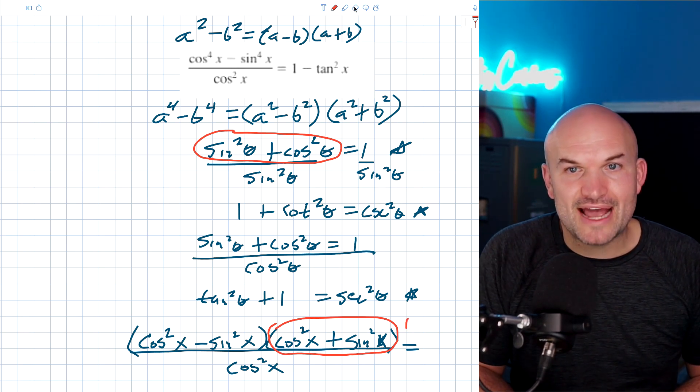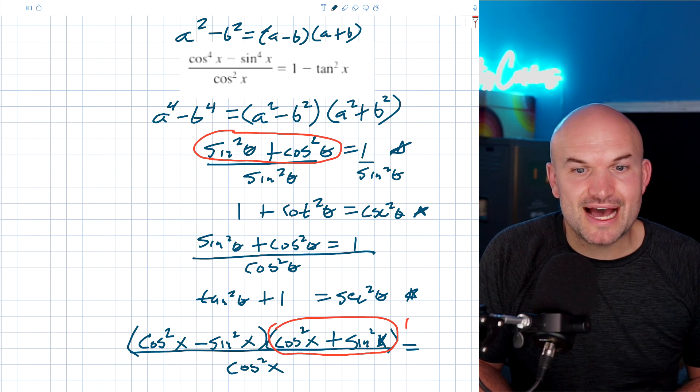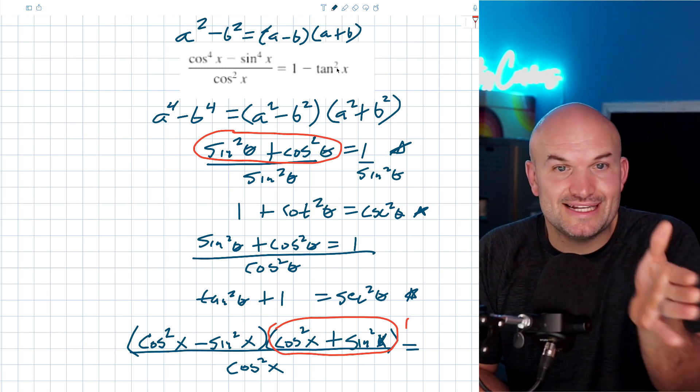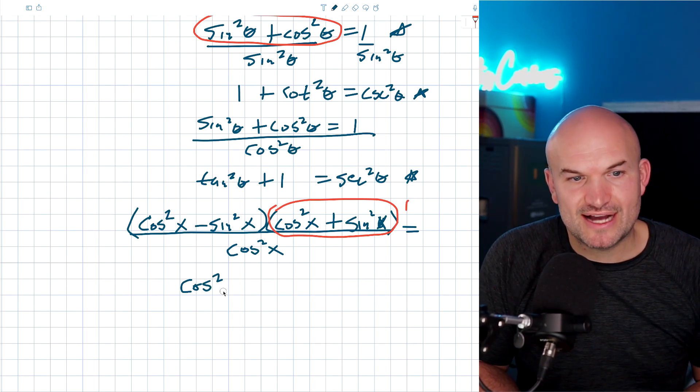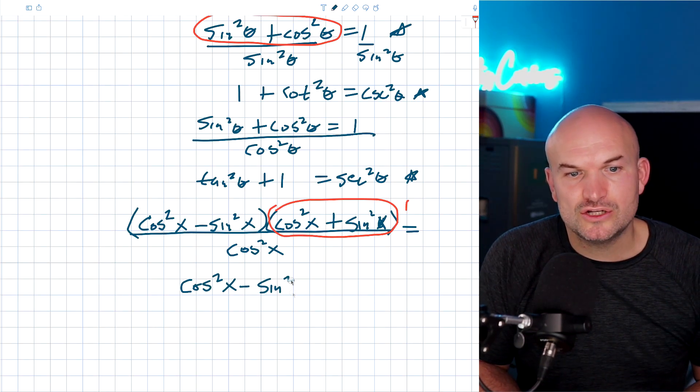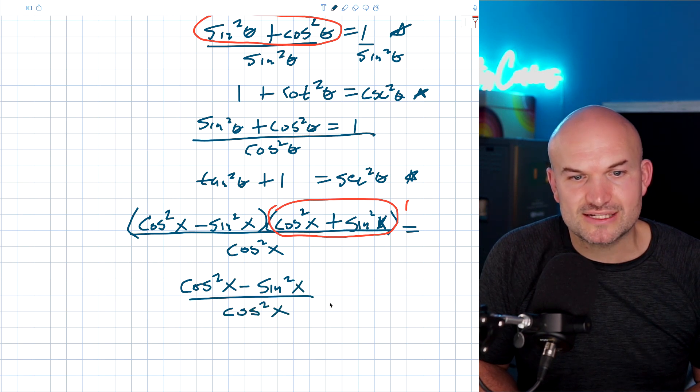So now, what I have in my identity on this right-hand side, which, again, I'm trying to make equal to one minus a tangent squared of theta, is I have a cosine squared of x minus a sine squared of x all over a cosine squared of x.